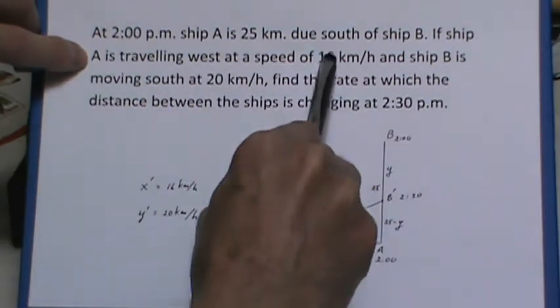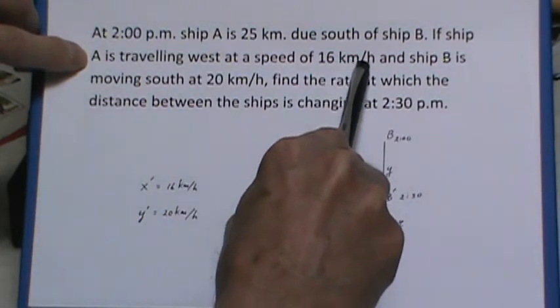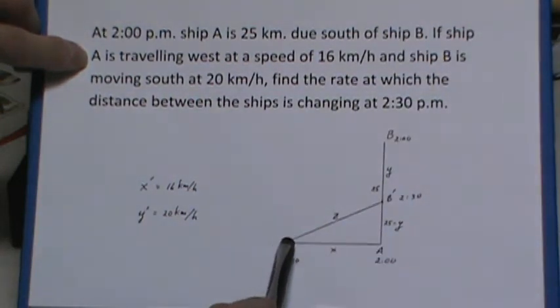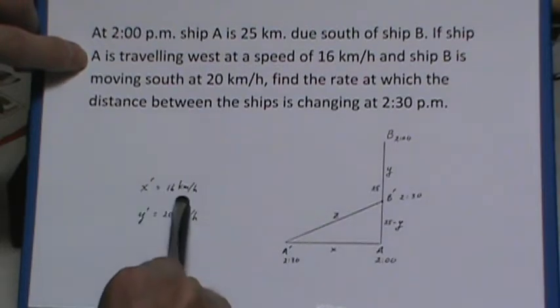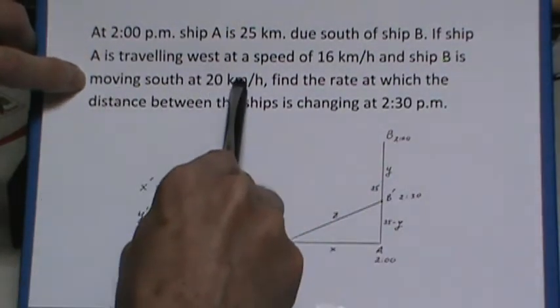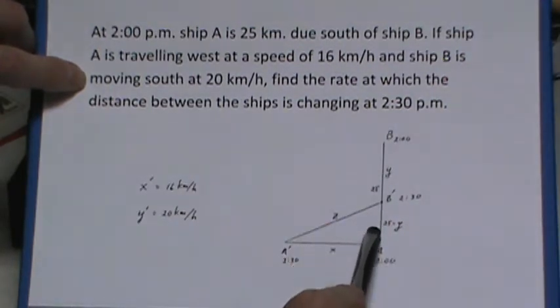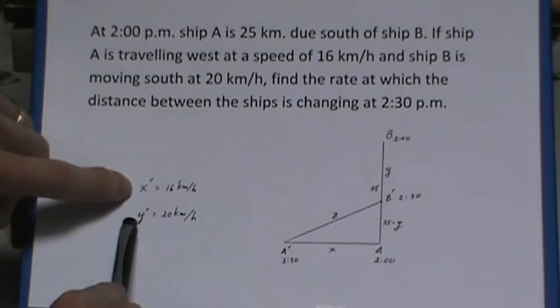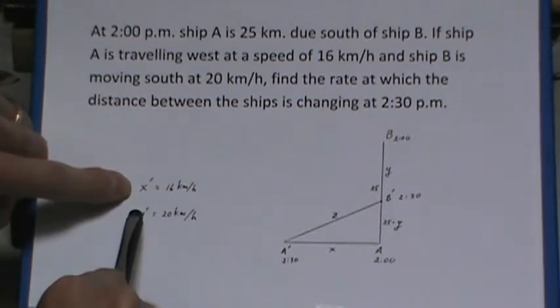Ship A is traveling west at a speed of 16 kilometers per hour. So that's along here, going west at 16 kilometers per hour. And ship B is moving south at 20 kilometers per hour. So I've got these primes here are dx/dt and dy/dt.